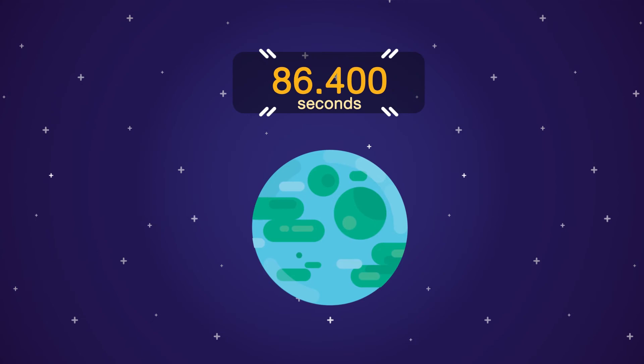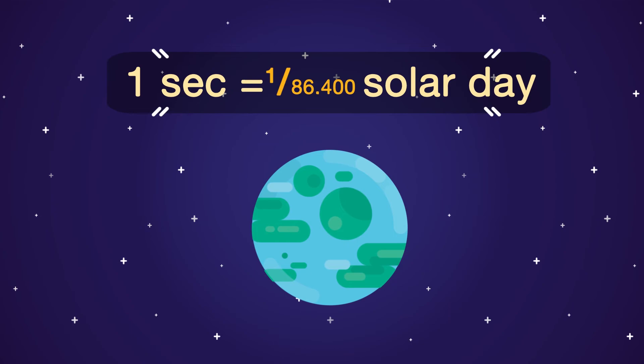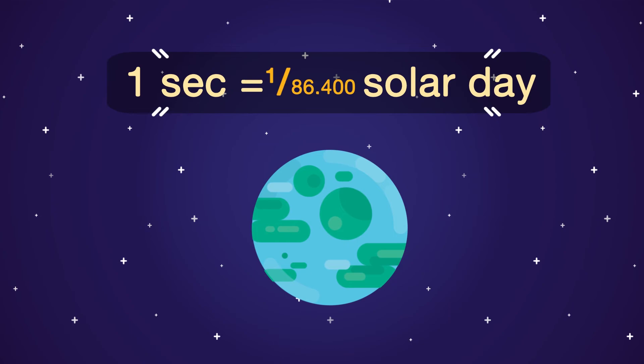This means one second is equal to 1/86,400th of a solar day. The accuracy of this definition is, however, affected by the irregularities of the Earth's orbit around the Sun, which causes some solar days to be longer than 24 hours, while some others are shorter.